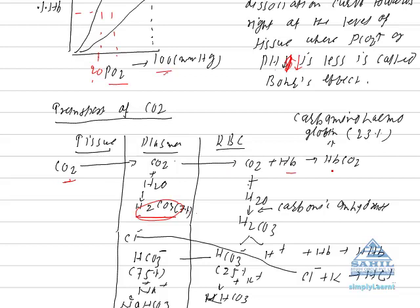In RBCs, CO2 combines with free hemoglobin to form carbaminohemoglobin, which accounts for about 23% of CO2 transport. This is also a non-enzymatic reaction occurring in the absence of enzymes.